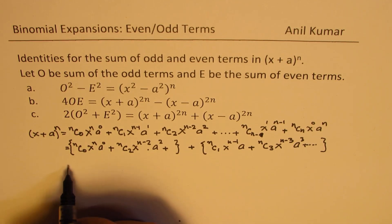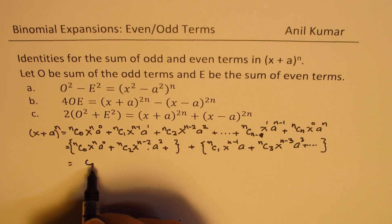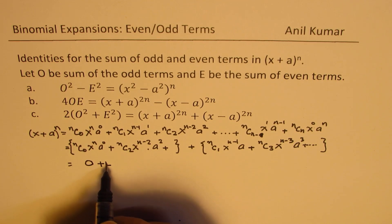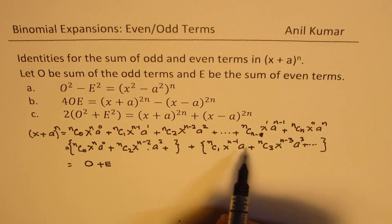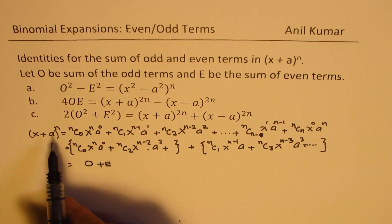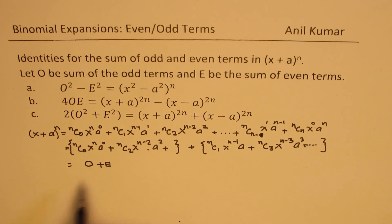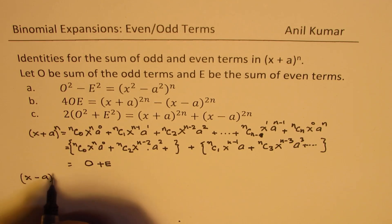We call the first series the sum of odd terms, written as O, and the second series the sum of even terms, written as E. So in (x + a)^n, the expansion equals O + E. Now if we do the expansion of (x - a)^n, the alternate terms will be negative.